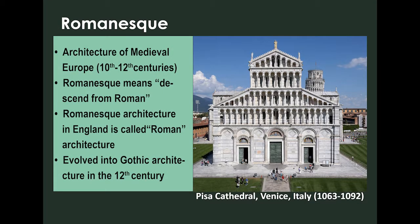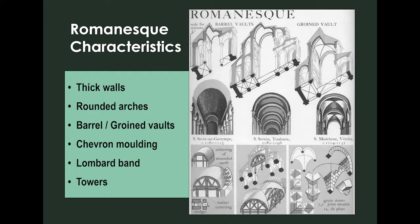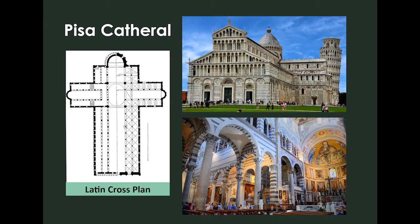Romanesque architecture is a term that describes the architecture of Europe which emerged from the Dark Ages of the late 10th century and evolved into the Gothic style during the 12th century. The Romanesque style in England is more traditionally referred to as Norman architecture. Romanesque architecture is characterised by its massive quality, thick walls, round arches, sturdy piers, groin vaults, large towers, and decorative arcading. Each building has clearly defined forms and symmetrical plans, with an overall appearance of simplicity compared to the Gothic buildings that followed. The style can be identified across Europe despite regional characteristics and a range of different materials.